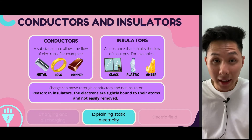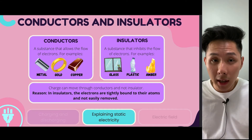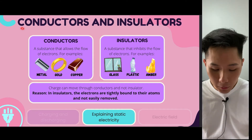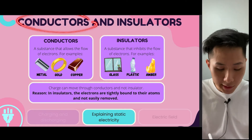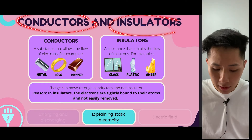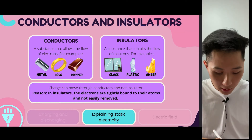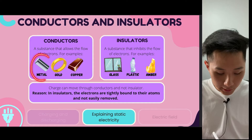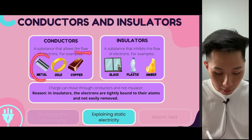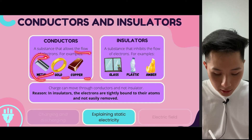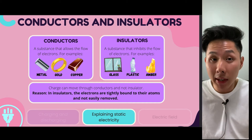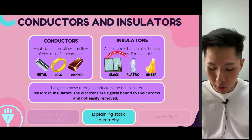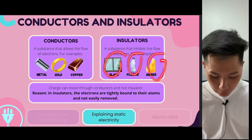So that's all about static electricity. To understand electricity better, you also need to understand the difference between conductors and insulators. Conductors are substances that allow the flow of electrons, like metal, gold, and copper. Whereas an insulator is one that inhibits the flow of electrons, like glass, plastic, and rubber.